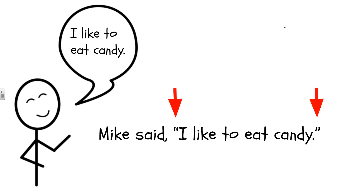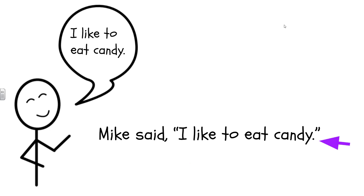Then we put our quotation marks around the actual words that the character is saying. Notice that we don't have the quotation marks around the words 'Mike said' — we only put the quotation marks around the words that actually came out of Mike's mouth, which are 'I like to eat candy.' The first letter of what the character says, inside the quotation marks, needs to be capital. And finally, we make sure that we put punctuation inside of the quotation marks. The period is inside the quotation marks because that is the entire thing that Mike said.